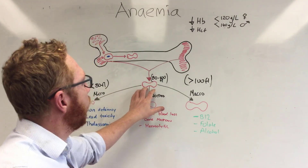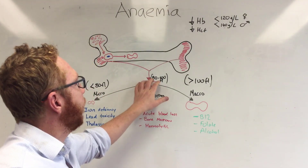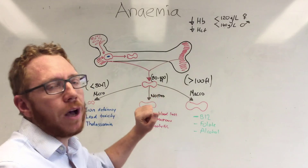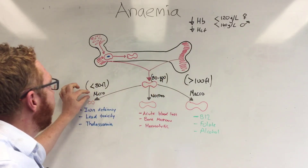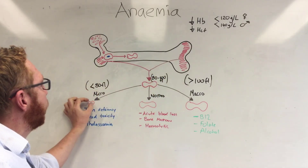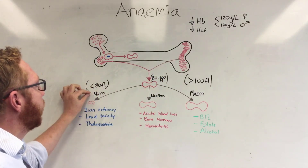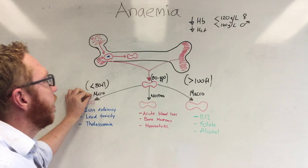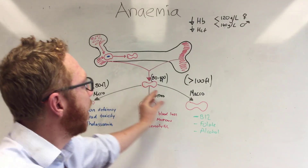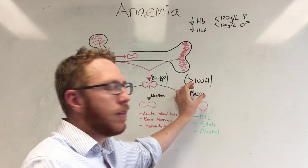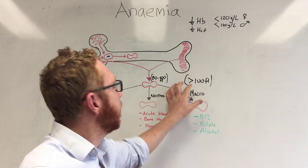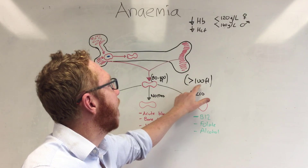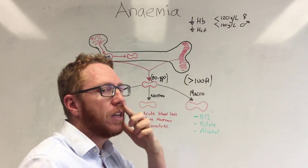A normal red blood cell should be 80 to 100 femtolitres. Below 80 femtolitres is considered a small red blood cell — the microcytics. Above 100 femtolitres would be the macrocytics.